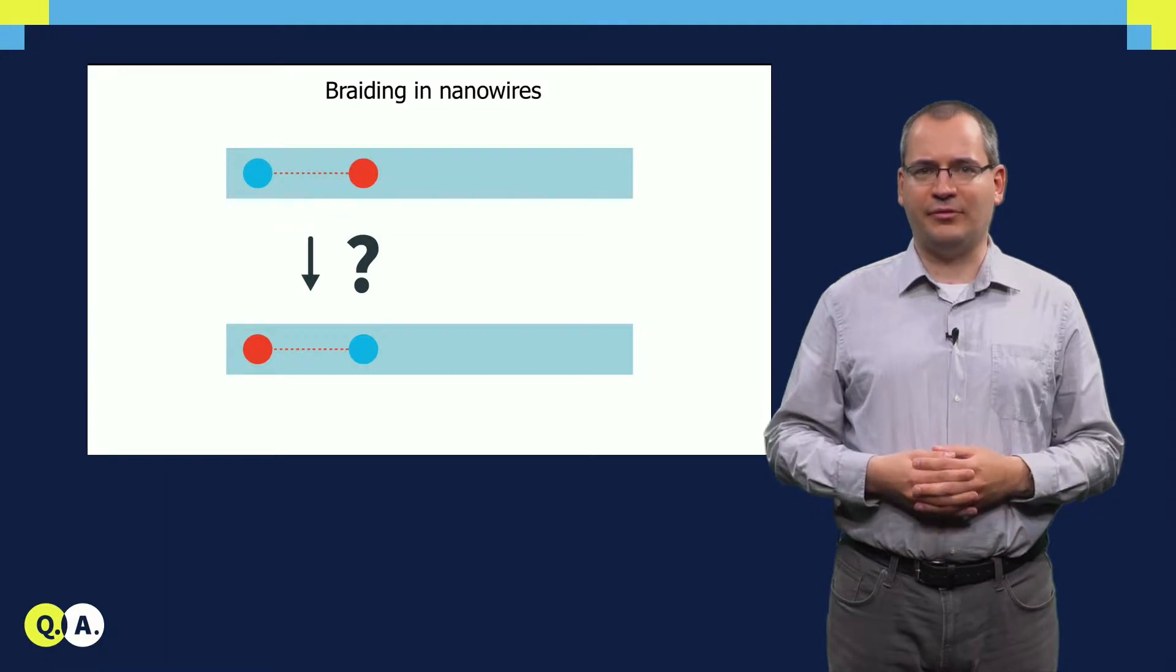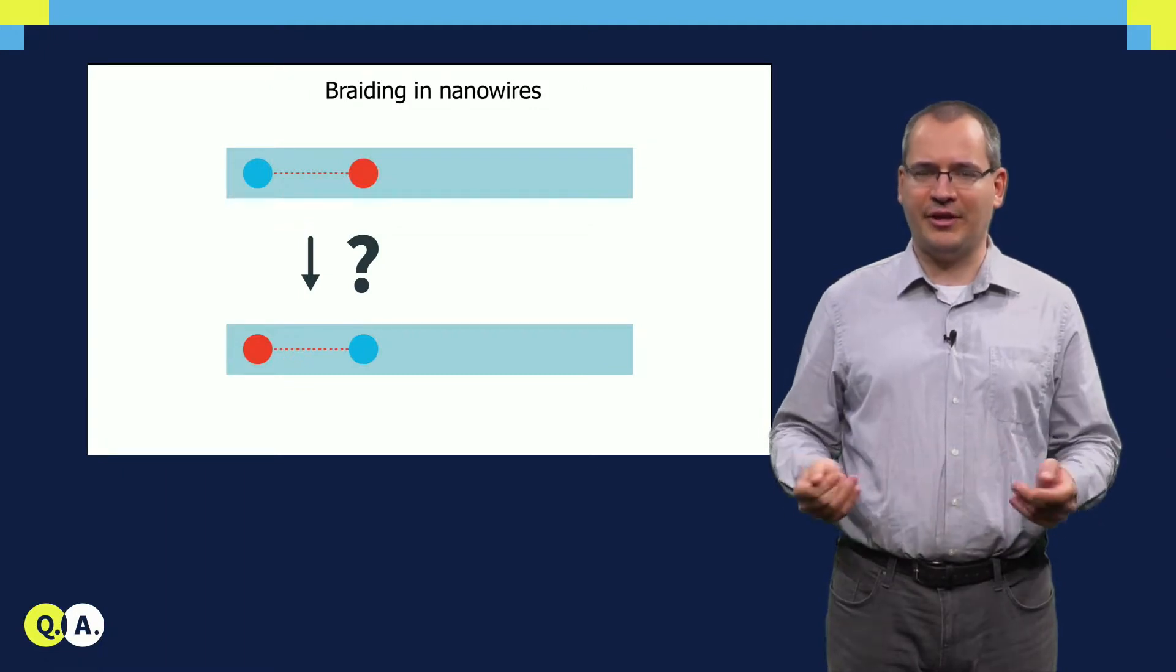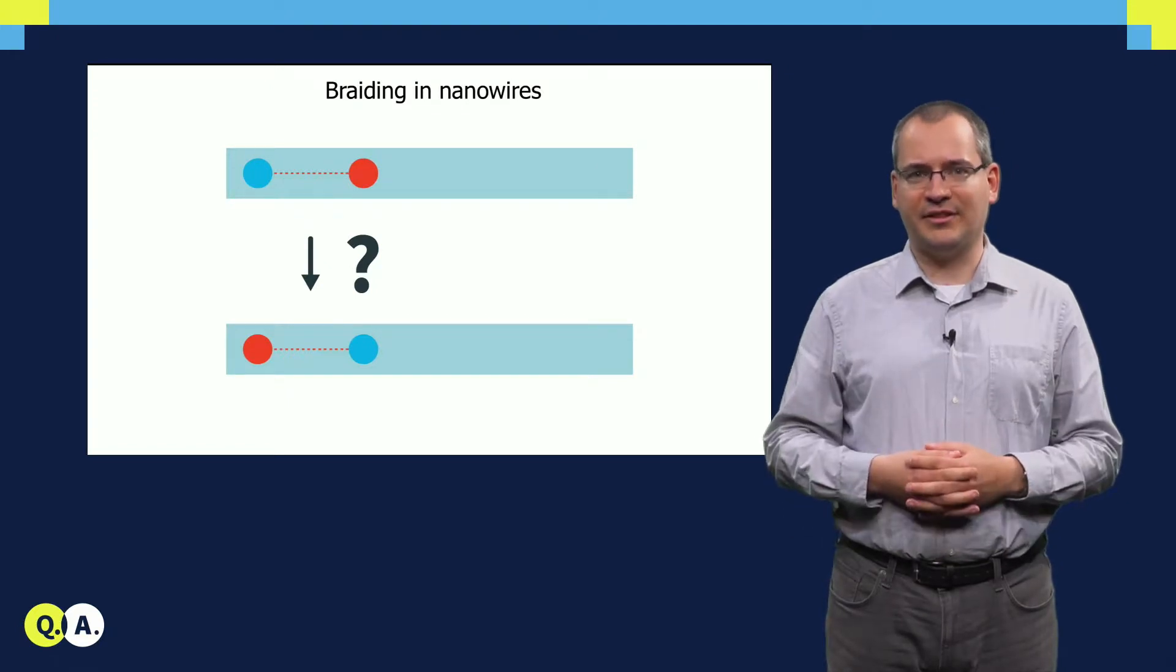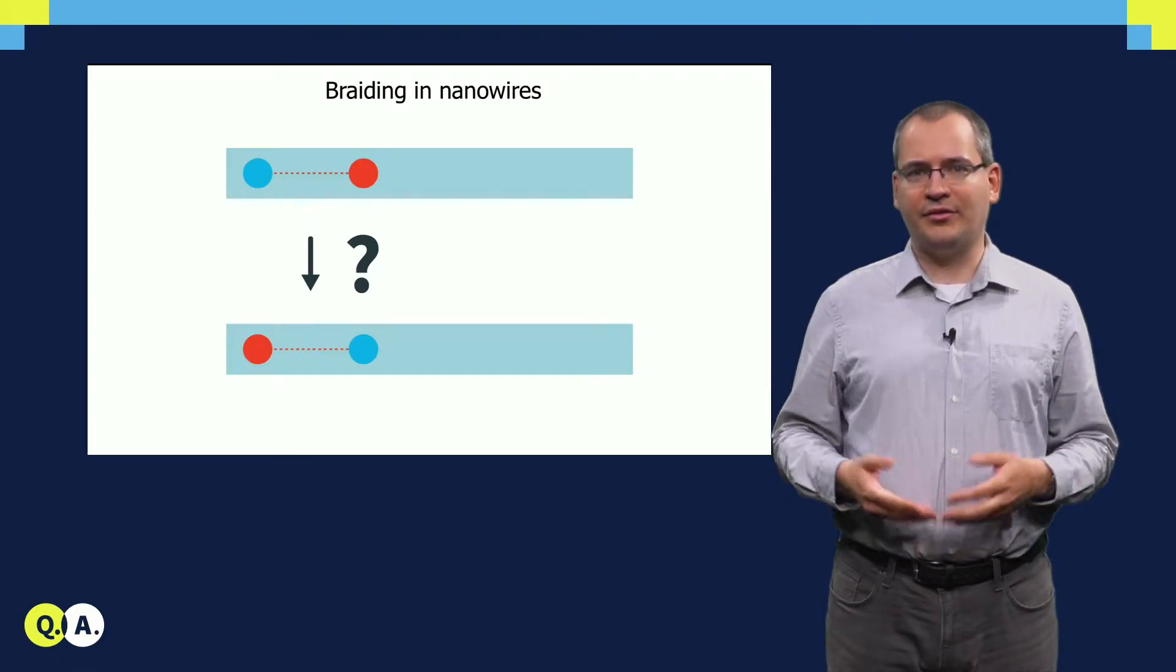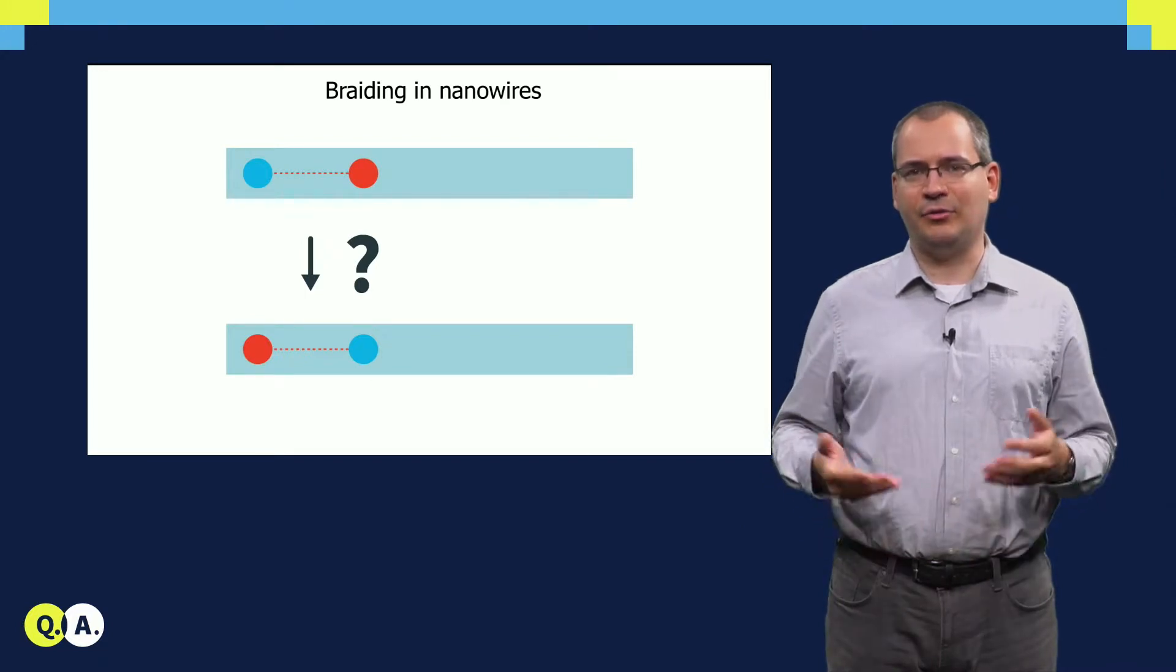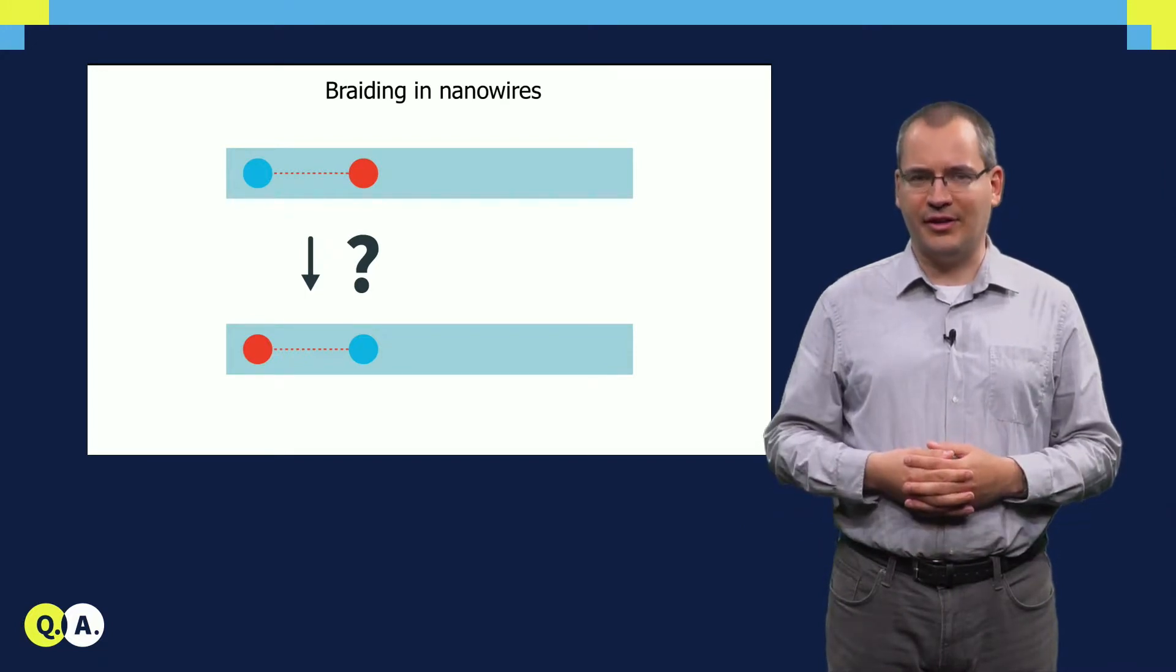Immediately when we envision a pair of these states in a one-dimensional nanowire, we encounter a problem. We cannot exchange these two particles without colliding them. This would lead to fusing them, which then measures the quantum state and hence loses quantum coherence.